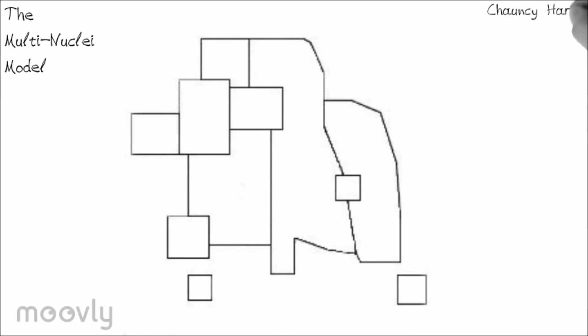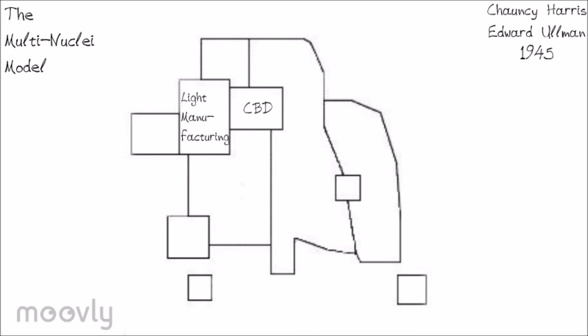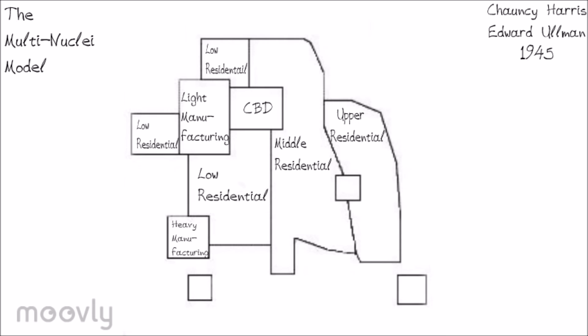The multi-nuclear model was made in 1945 by Chauncey Harris and Edward Ullman. They said the CBD was losing its importance and should be seen as a nucleus rather than the focal point. The different zones developed into independent areas based on their activities, each near compatible zones. The zones include the CBD at the center, light manufacturing to the left creating easy products, low-class residential above and below the light manufacturing and CBD, middle-class residential to the right of the CBD, upper-class residential further right, heavy manufacturing at the bottom handling heavier polluting products, the outlying business district between the middle and upper-class zones usually a mall, the residential suburb below the upper-class zone containing upper-middle class residents, and the industrial suburb near heavy manufacturing containing lower-class factory workers.